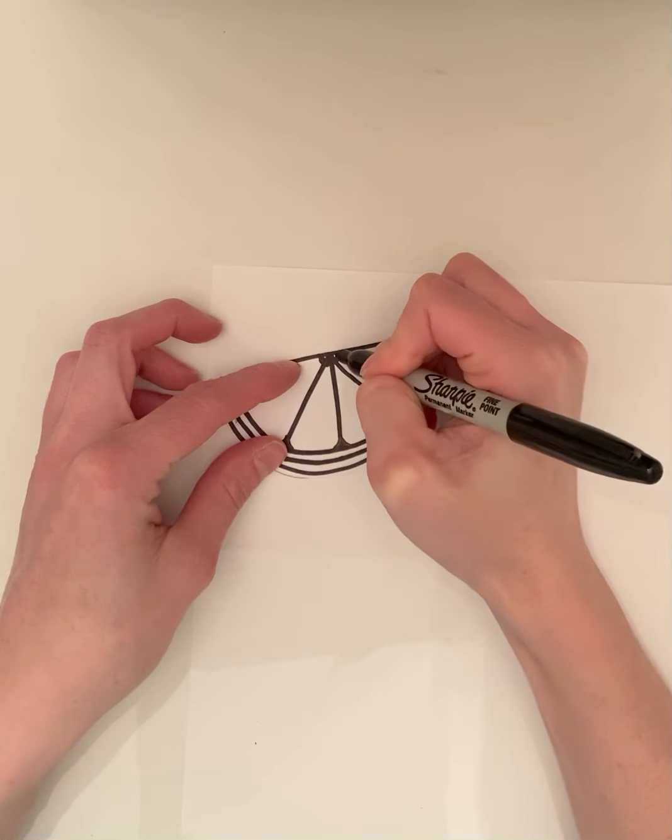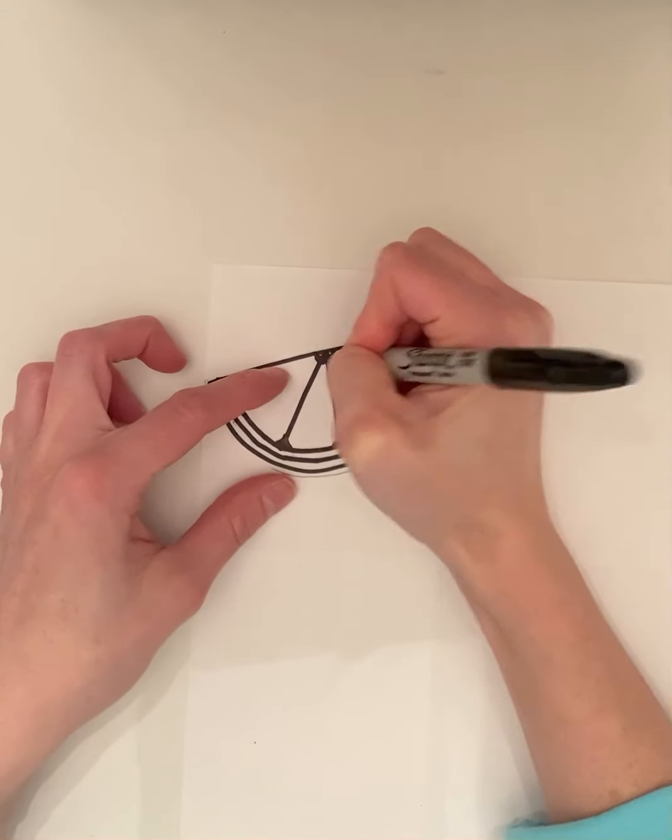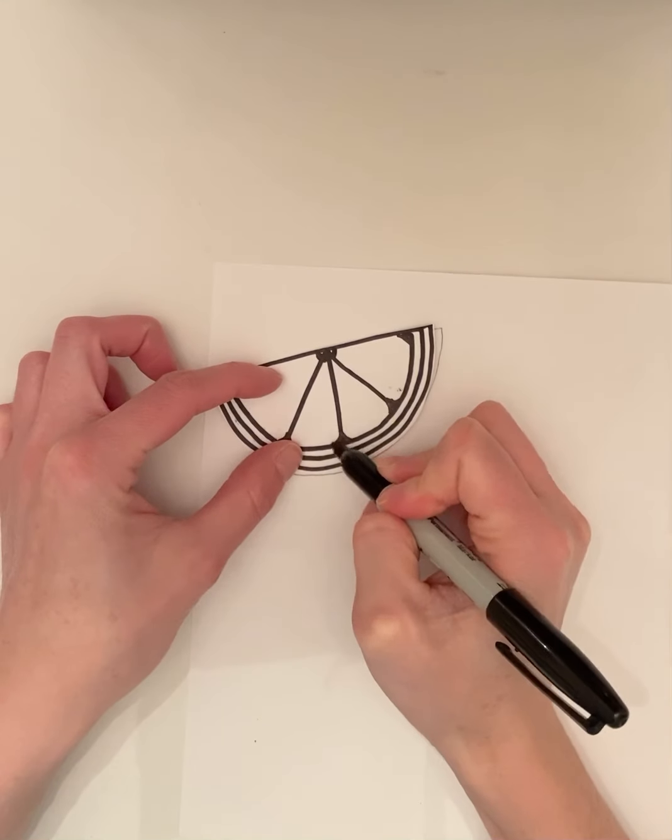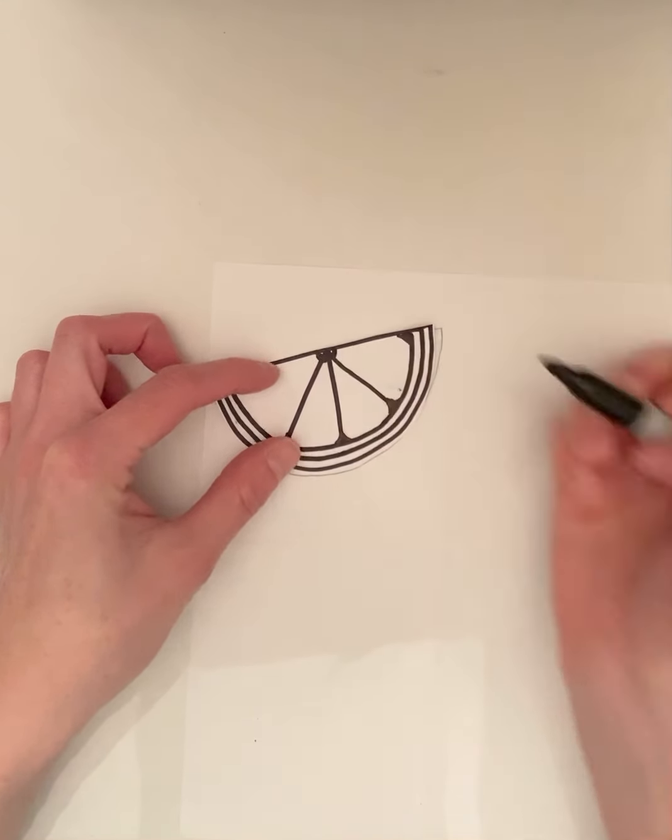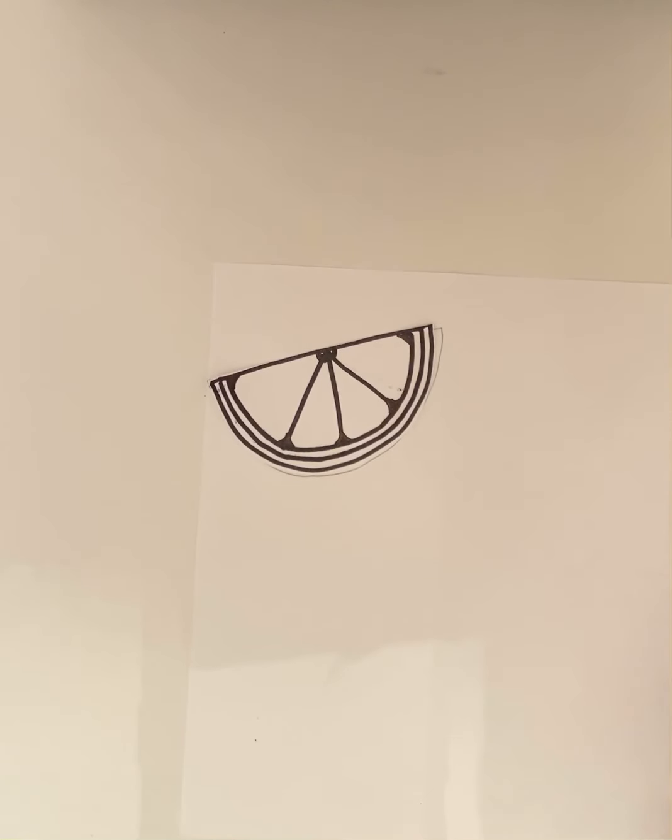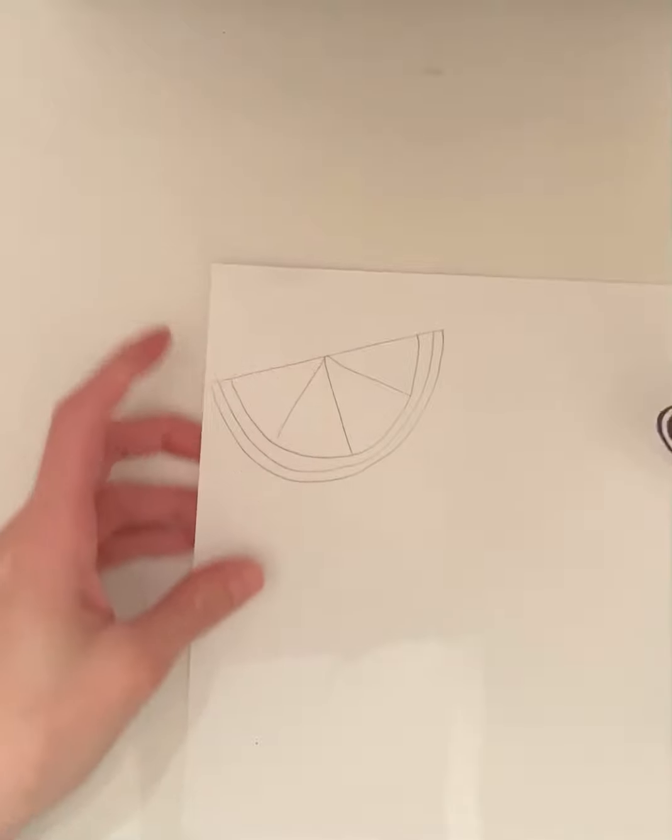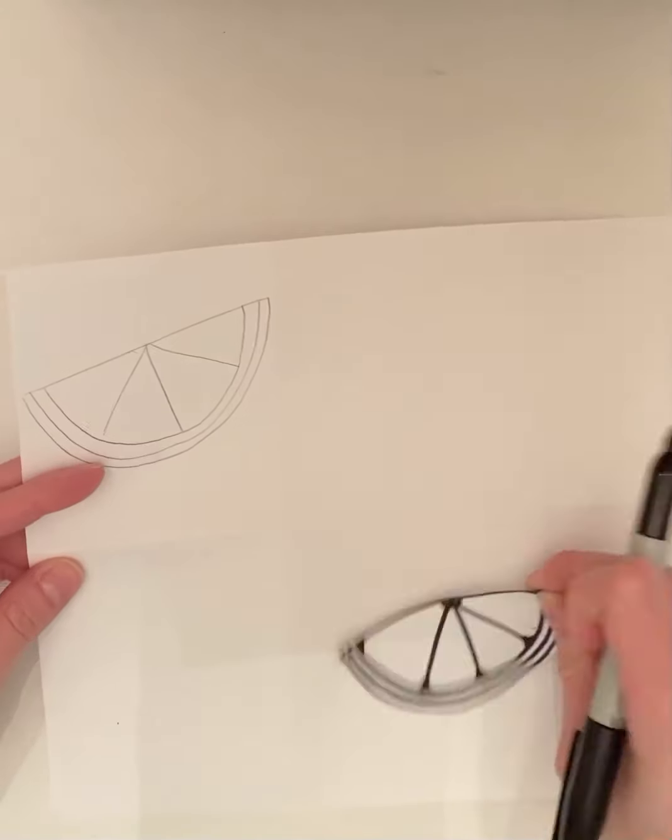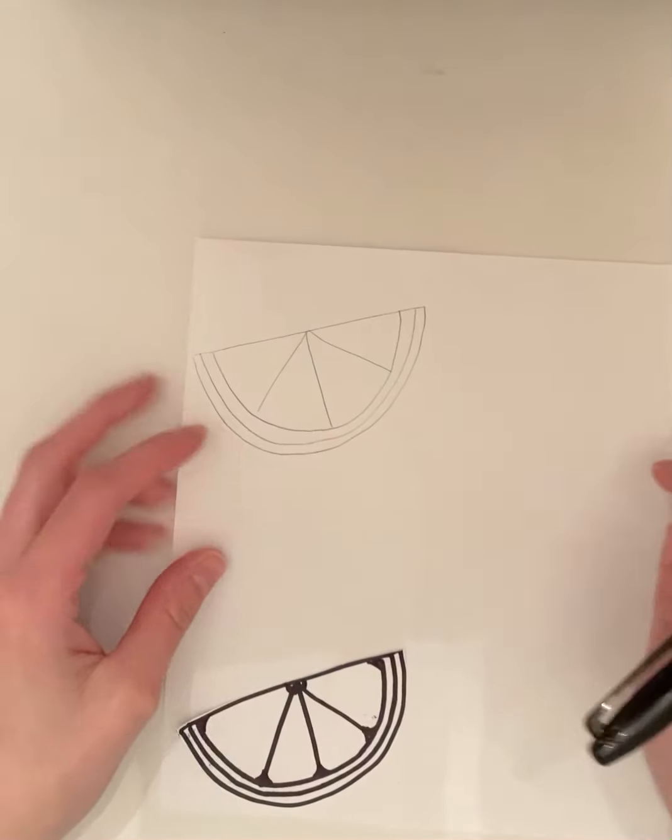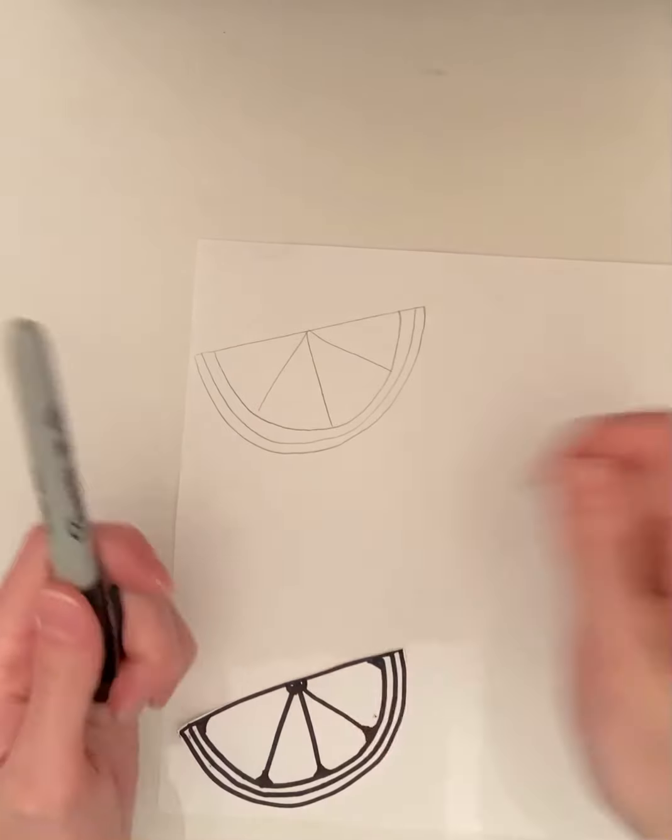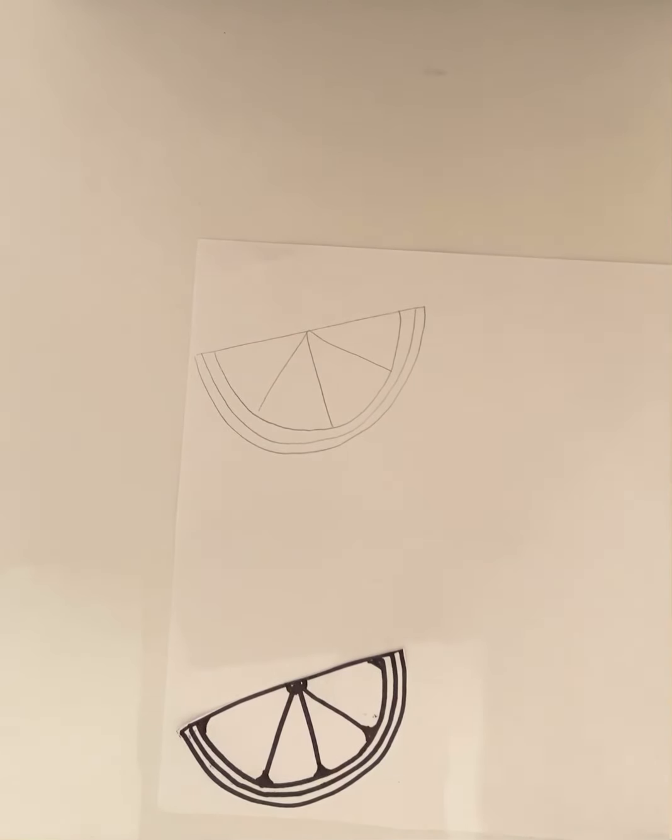And then do some curved lines here. These curve out and these curve in. That's just how I decided to do that. And then I'll trace it five more times. And then go over with Sharpie. Erase your pencil lines when you're done and then you'll be ready to color.